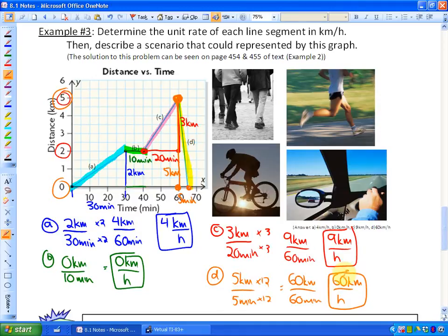The last part is to read the question and see if we've finished it. Determine the unit rate of each line segment in kilometers per hour. We've done that. Then describe a scenario that could be represented by this graph.